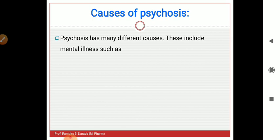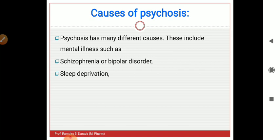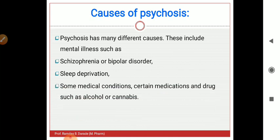The causes of psychosis — psychosis has many different causes. They may include mental illness such as schizophrenia, mania (excessive happiness), and bipolar disorder (where opposite to mania, depression is present). Other causes include sleep deprivation, certain medical conditions, certain medications, and drugs such as alcohol and cannabis.